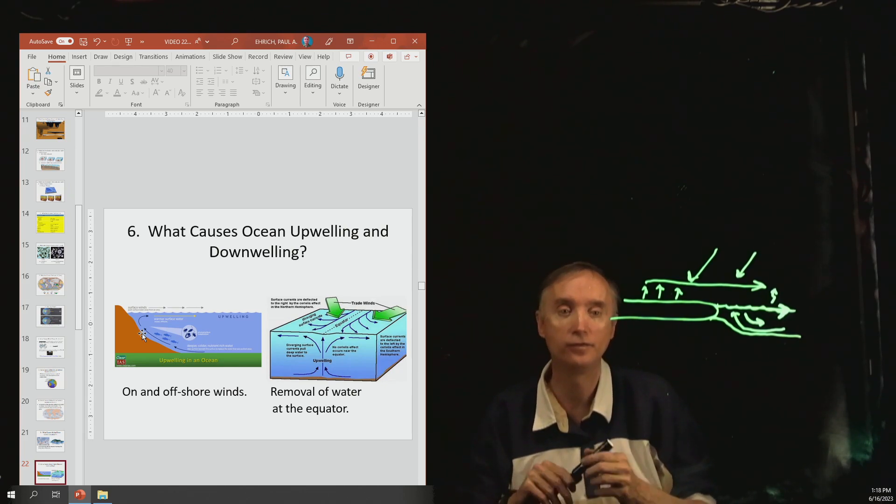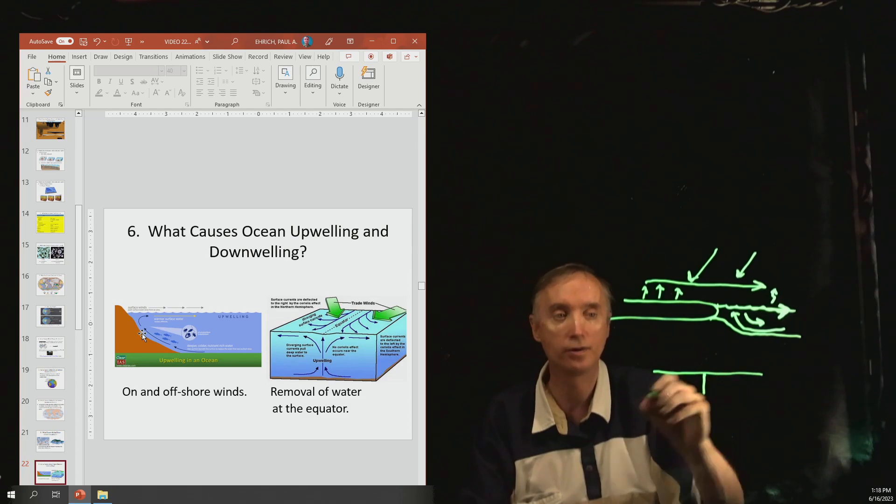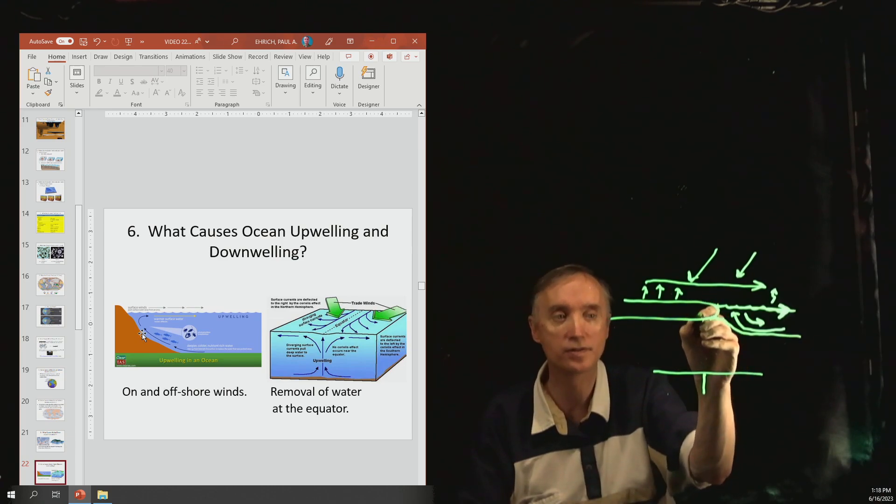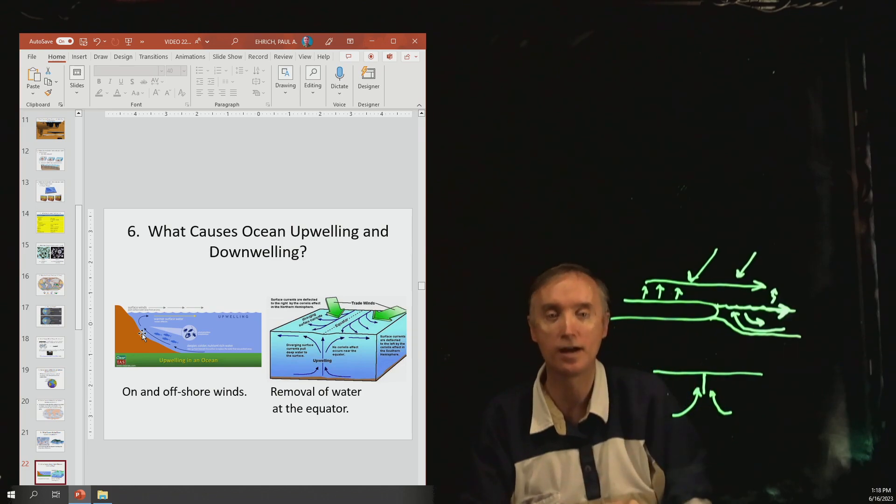So if at the equator, let's say this is the surface of the water and this represents the equator right here. Then as this water is evaporating and going up into the sky, it has to be replaced.